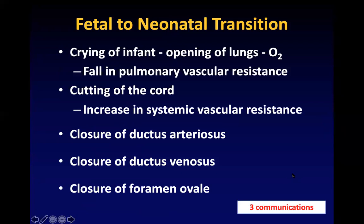Knowing the transition: the baby cries at birth, the lungs open, oxygen flows into the lungs, and this oxygen opens up the capillaries resulting in a fall in pulmonary vascular resistance. So the first thing is the baby is born, the brain gets stimulated, the baby cries, and this leads to a fall in pulmonary vascular resistance. The second thing which happens at birth is the obstetrician cuts the cord — because the umbilical arteries are connected to the aorta, the systemic vascular resistance increases.